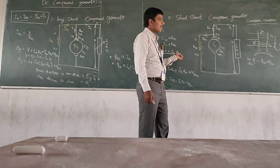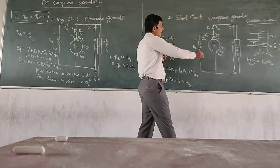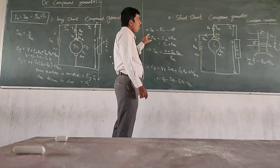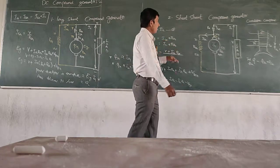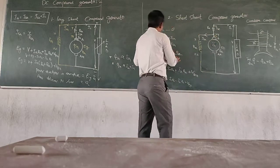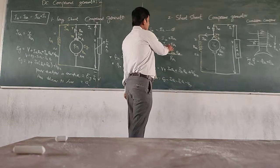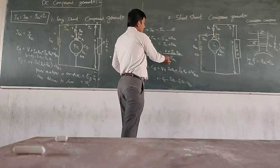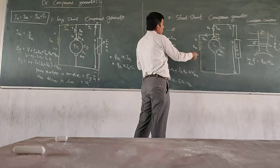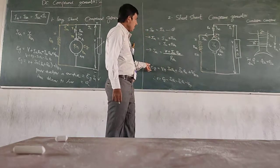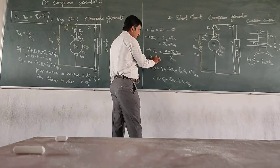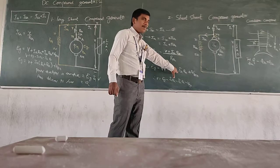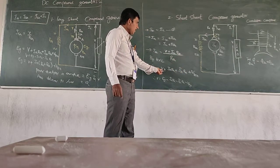The current and voltage relationships for short shunt: Ia equals IL plus Ish, because Ia is the total sum of IL and Ish. Ish equals V divided by Rsh — but for short shunt it is (V plus IL·Rsc) divided by Rsh. The generated voltage Eg, by applying KVL: Eg equals V plus Ia·Ra plus IL·Rsc plus Vbc.